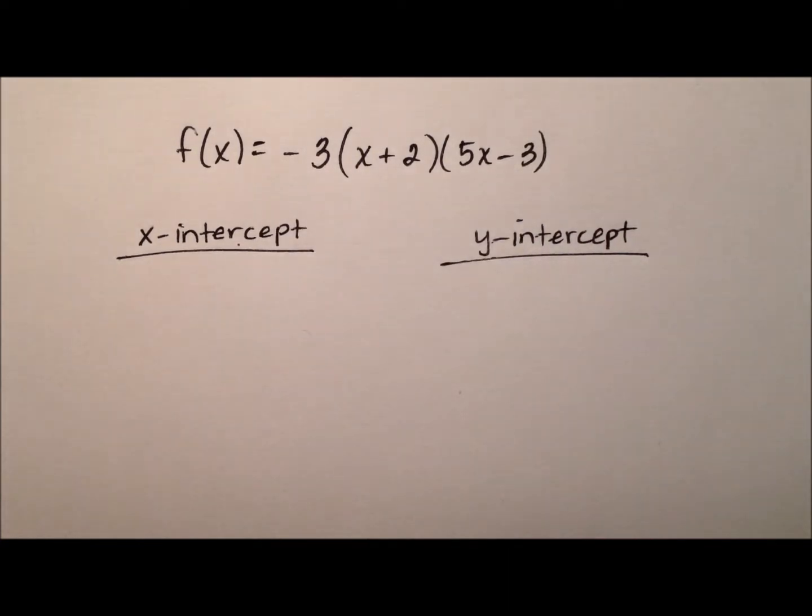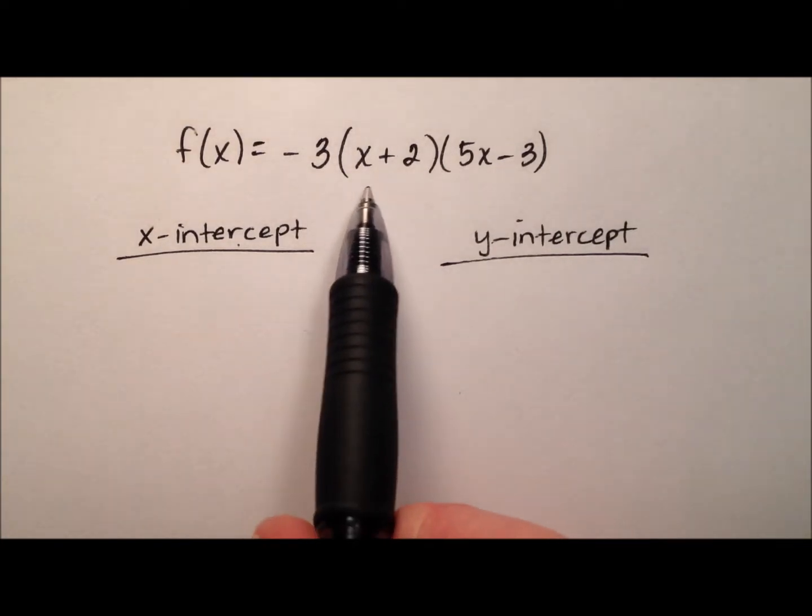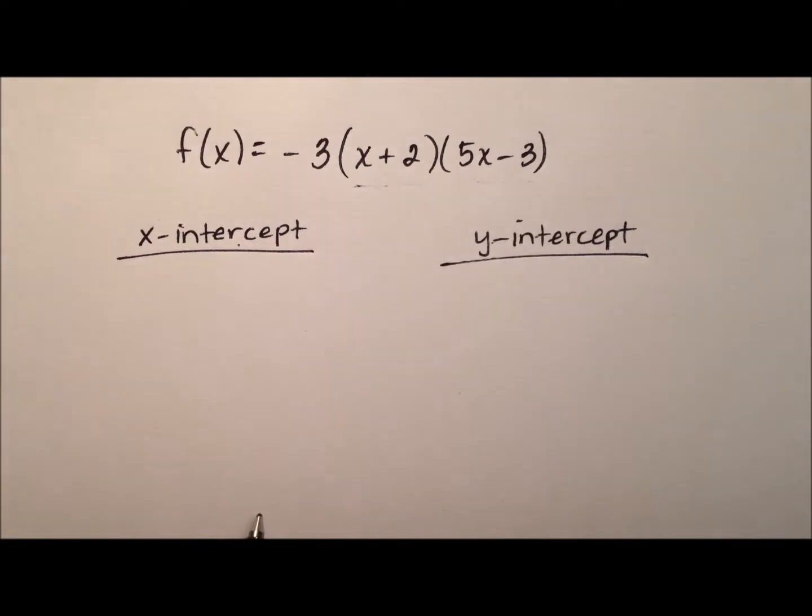So it will have one y-intercept and either 0, 1, or 2 x-intercepts, but as you can see it's already in factored form, so it will indeed have two different x-intercepts.